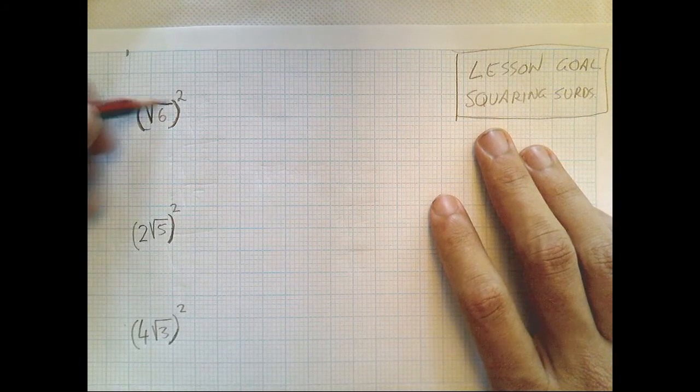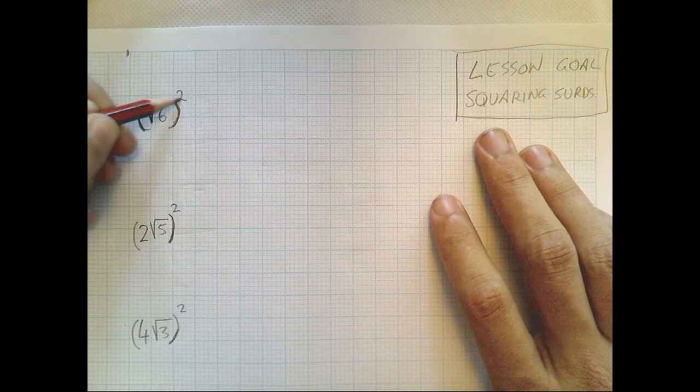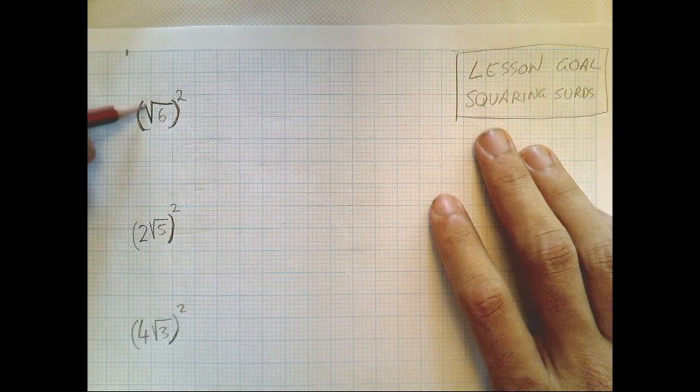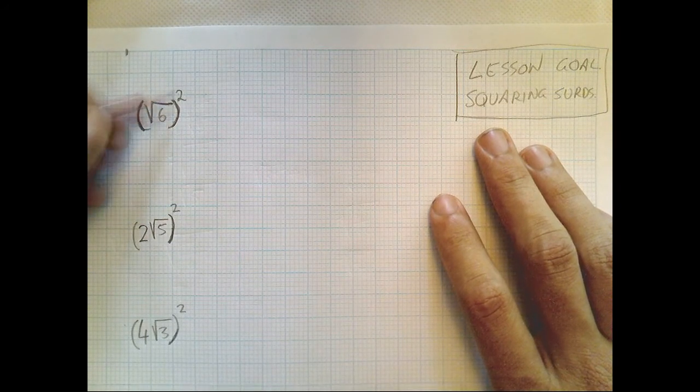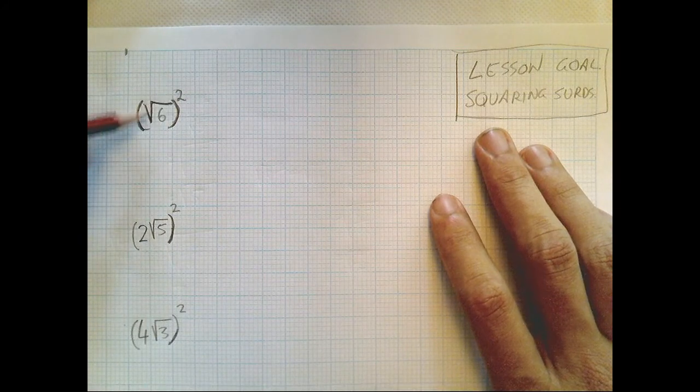Basically, we're going to take a surd and we're going to square it. You can see the square up there. So root six, in brackets, and then we're squaring whatever that is.